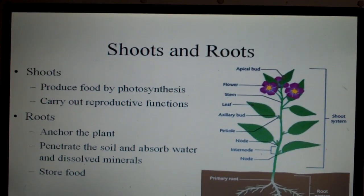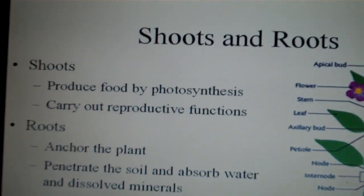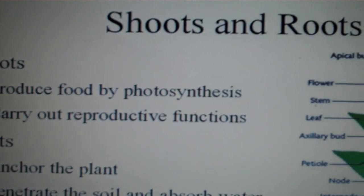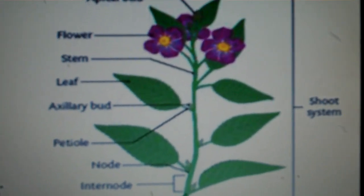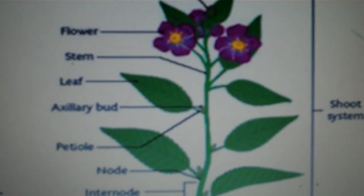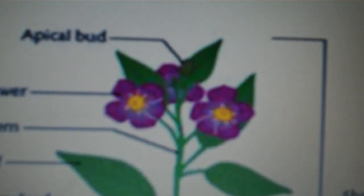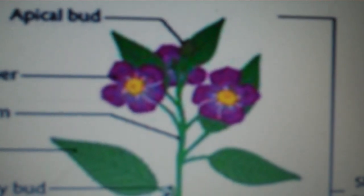Now shoots and roots. Shoots produce food by photosynthesis and they also carry out the reproductive functions. So the leaves and the green stem are where photosynthesis occurs in the mesophyll tissue and the reproductive structures would be the flowers.